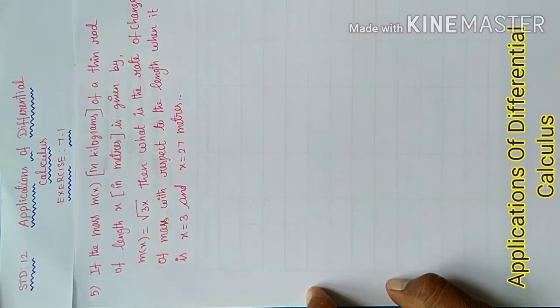Good morning students. Today, our 12th standard chapter Application of Differential Calculus, exercise 7.1. If the mass m(x) of a thin rod of length x is given by m(x) equal to root of 3x, then what is the rate of change of mass with respect to length at x equal to